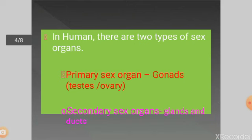We have two different types of sex organs in an individual: primary sex organs and secondary sex organs. The primary sex organ is nothing but the gonads — organs which exclusively synthesize gametes. For example, in the human male reproductive system, the gonads are the testes, which produce sperm. In the human female, the primary sex organ is the ovary.